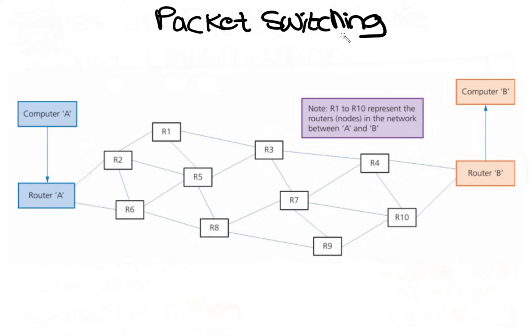A router receives a data packet and, based on the information in the header, decides where to send it next. This diagram shows a typical network showing possible routes between A and B.